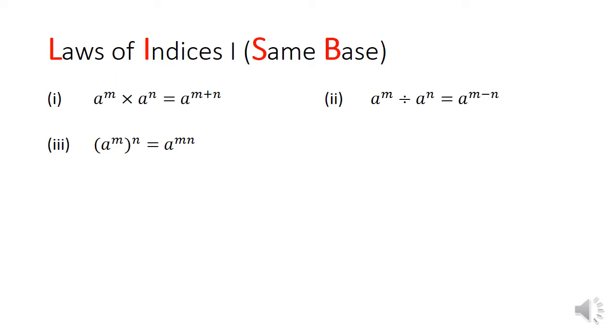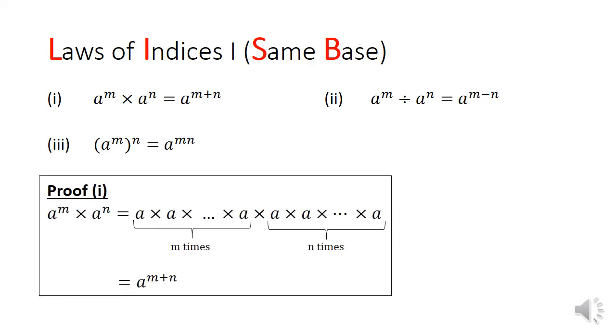In law 1, when we multiply a to the power of m with a to the power of n, you get a to the power of m plus n. You essentially sum up the indices. How this works is that when you multiply a by itself m times followed by another n times, altogether you have multiplied a by itself m plus n times.